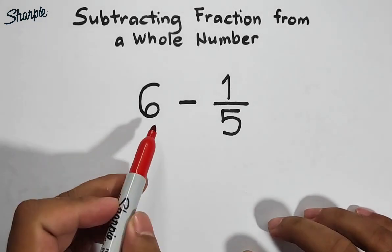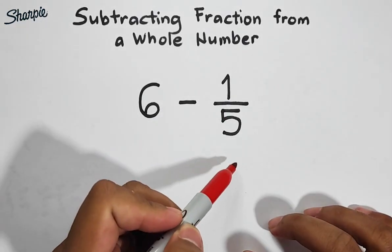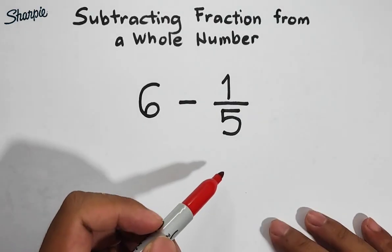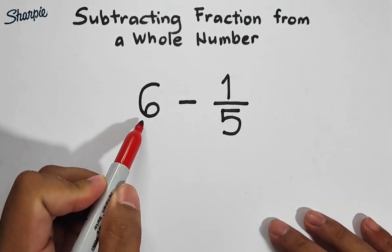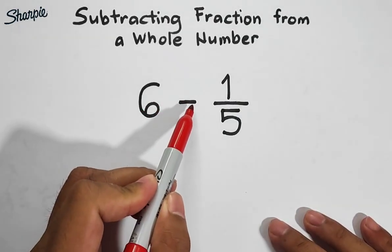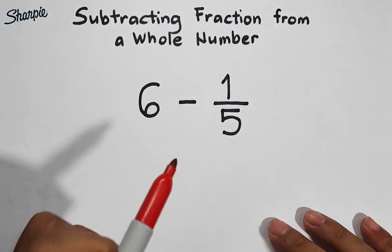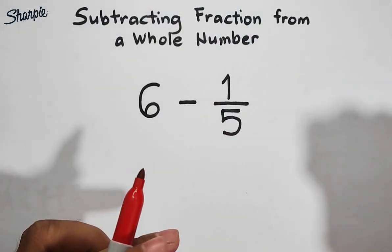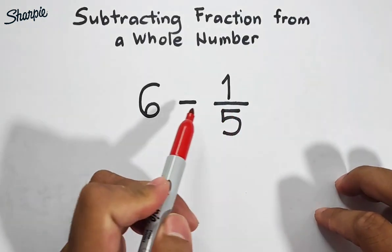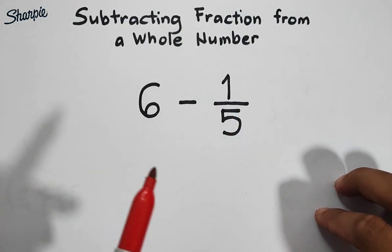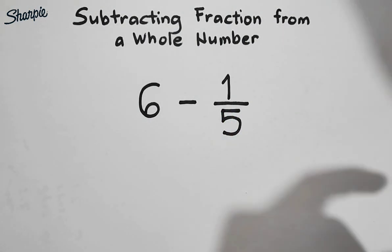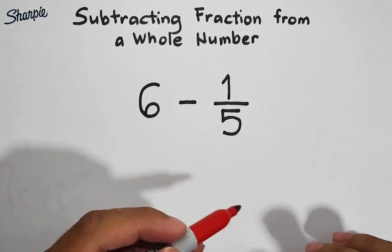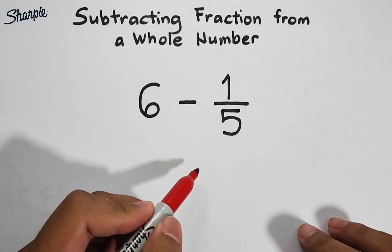We have here 6 minus 1 over 5. In this example, 6 is the whole number and 1 over 5 is your fraction. The question is, how are we going to subtract 1 over 5 from this whole number? Let's try solving this. I will show you two different methods.